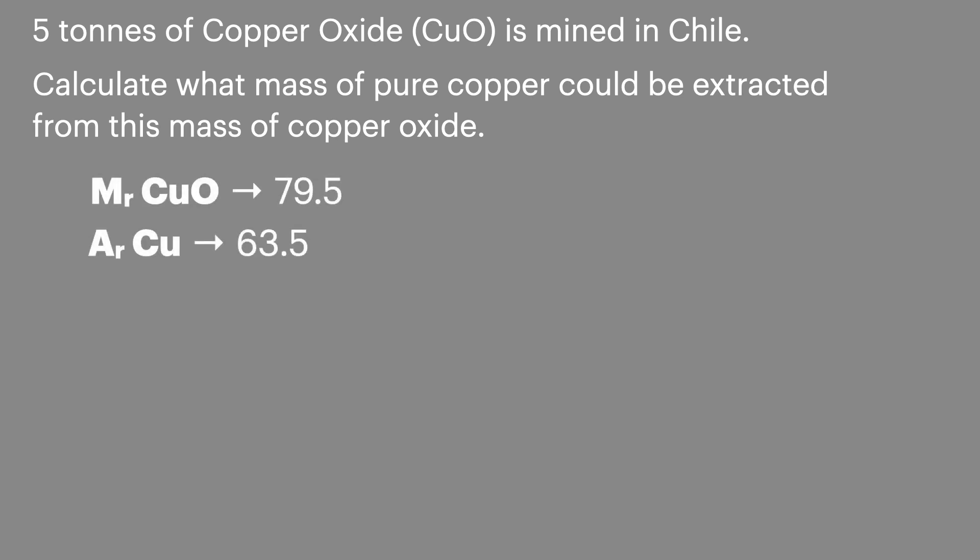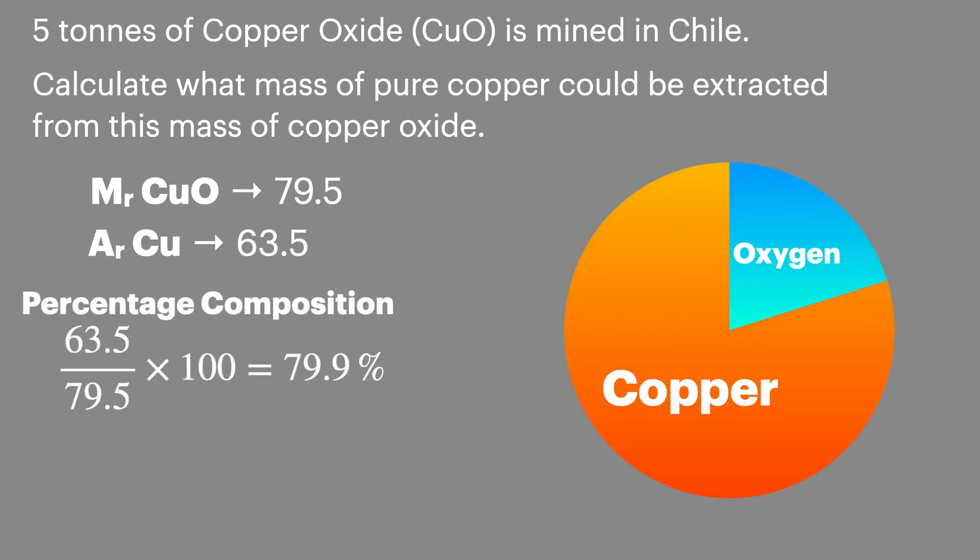First, we calculate the relevant MRs and ARs for these samples, then put them in the equation to calculate the percentage composition. In the final step, we multiply the starting mass by the percentage composition to calculate how much pure copper can be extracted.